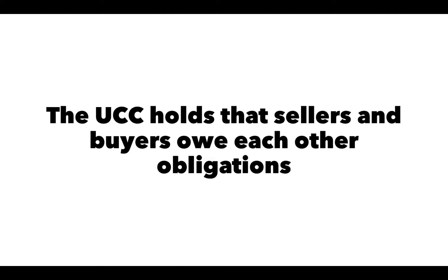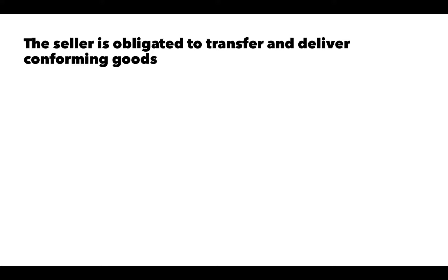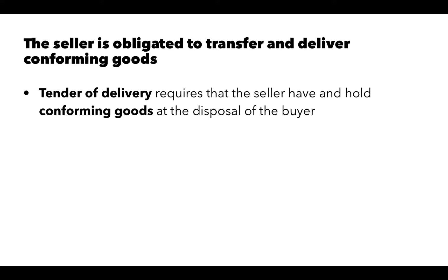The UCC holds that sellers and buyers owe each other obligations. The seller is obligated to transfer and deliver conforming goods — that's the basic obligation of a seller. There is a concept called tender of delivery, which means that the seller will make the goods available to the buyer and do everything necessary in order to make the goods available. Conforming goods are those items that conform to the contract in every possible way.